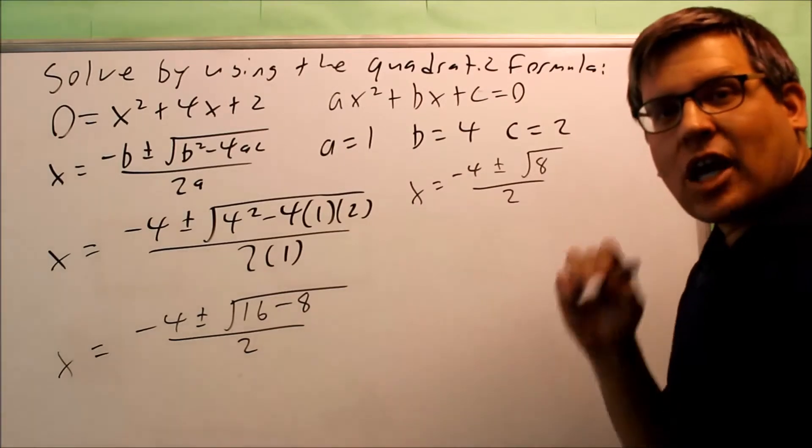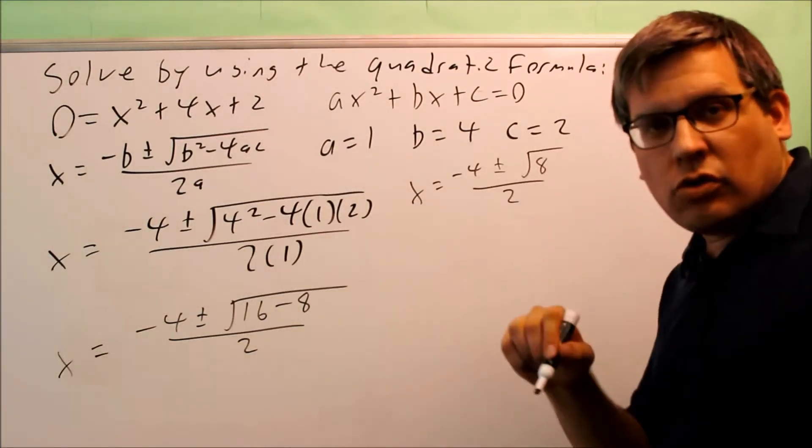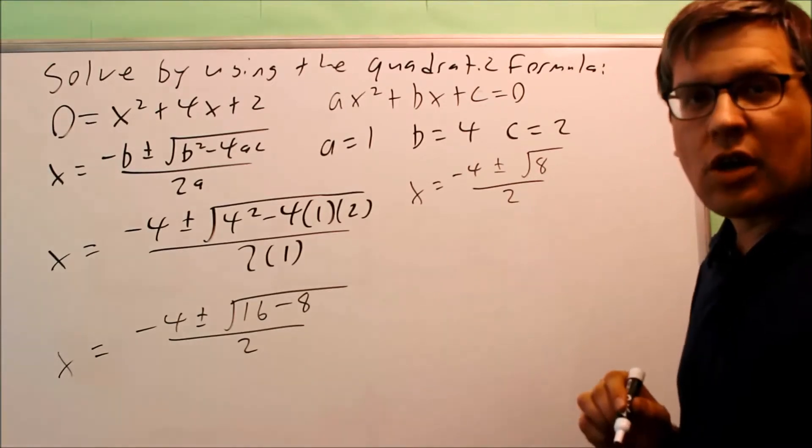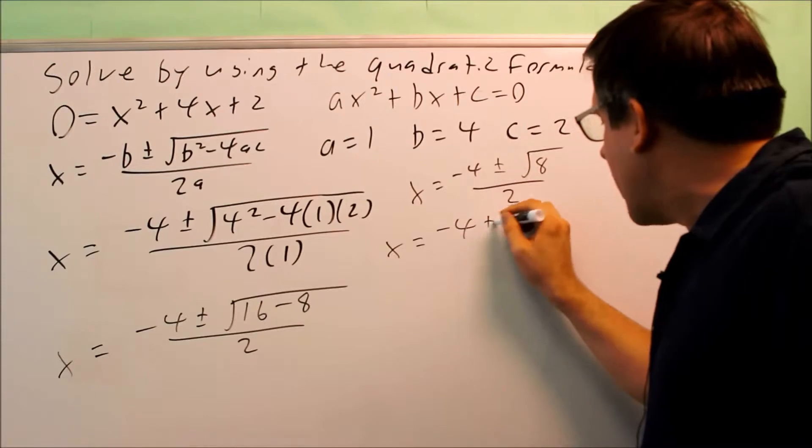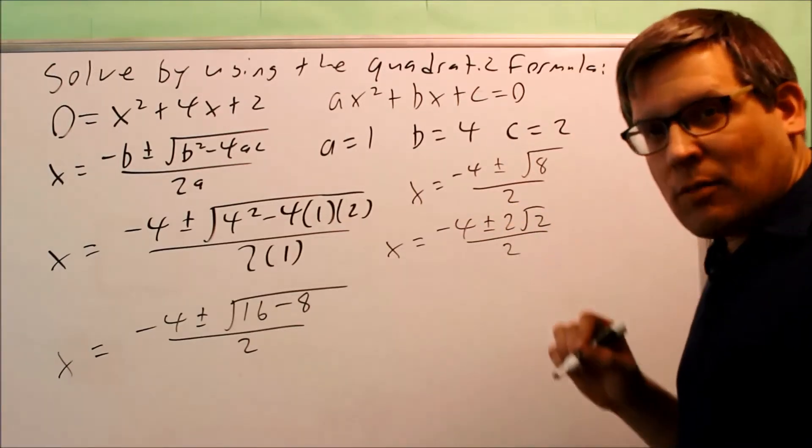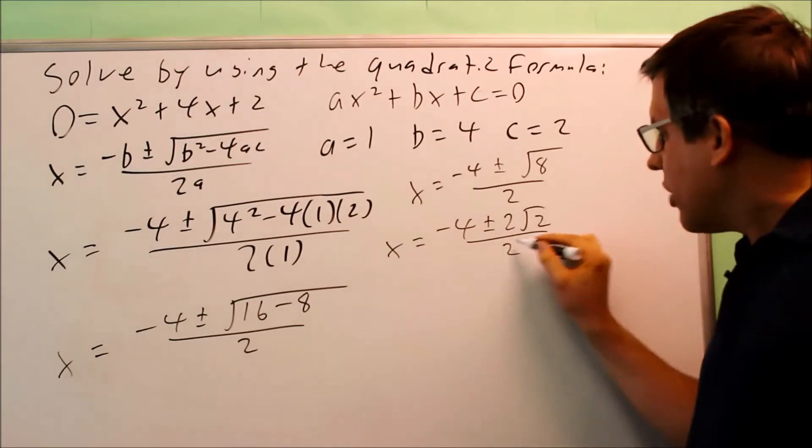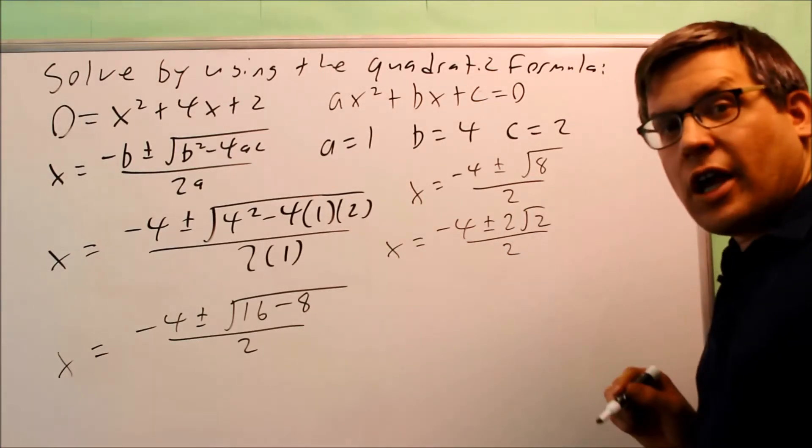Now square root of 8, that can be written as 4 times 2. The square root of 4 is 2, so therefore a 2 can come outside of the radical. So I want to write this the most simplified as possible. So again, the 8 is 4 times 2, the square root of 4 is the 2 that comes outside. So this would be the most simplified that square root of 8 could be.